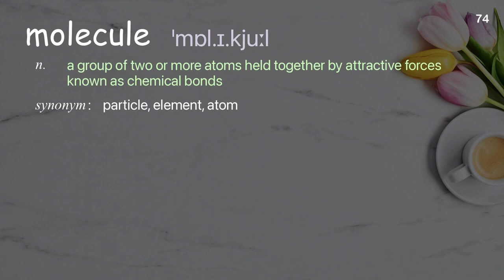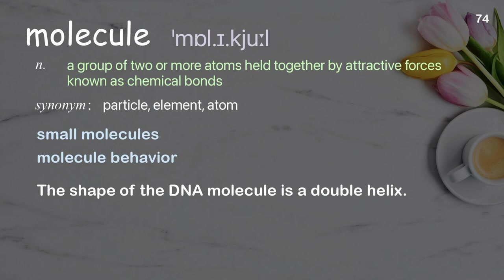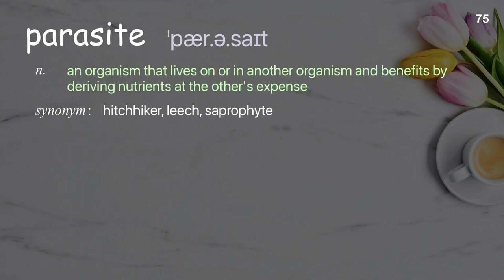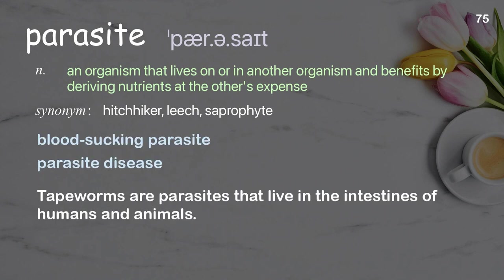Molecule: a group of two or more atoms held together by attractive forces known as chemical bonds. Examples: small molecules, molecule behavior. The shape of the DNA molecule is a double helix. Parasite: an organism that lives on or in another organism and benefits by deriving nutrients at the other's expense. Examples: blood-sucking parasite, parasite disease. Tapeworms are parasites that live in the intestines of humans and animals.